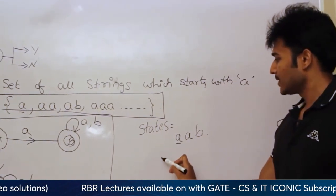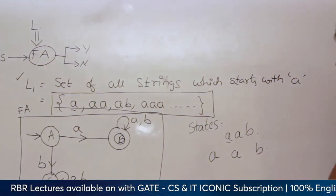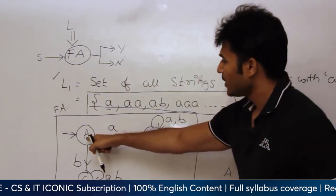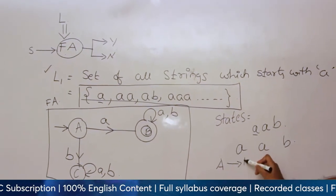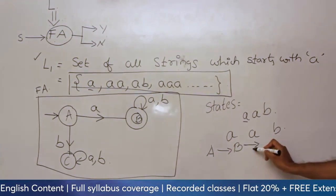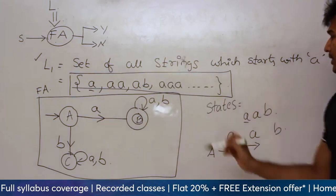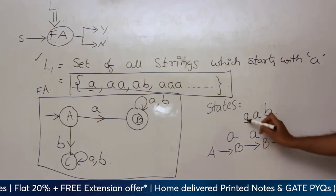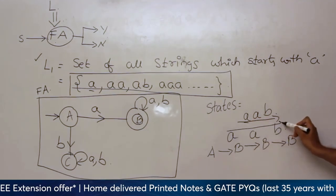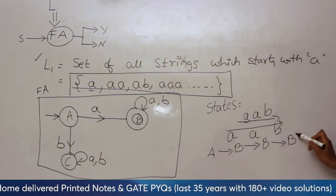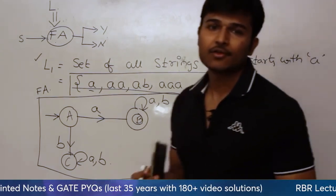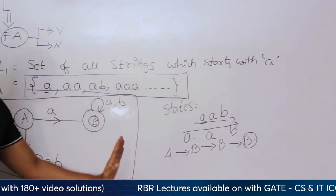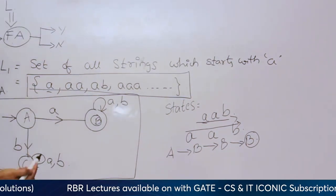Initially I will start from initial state A. Upon looking at small 'a', A goes to state B. Upon looking at the next small 'a', B stays in the same state. Upon looking at small 'b', B stays in the same state. Now, upon scanning the entire string, we started from the initial state and ended at the final state. So a string is said to be accepted by the finite automata if, upon scanning the entire string, we reach from the initial state to the final state. This string AAB is accepted.